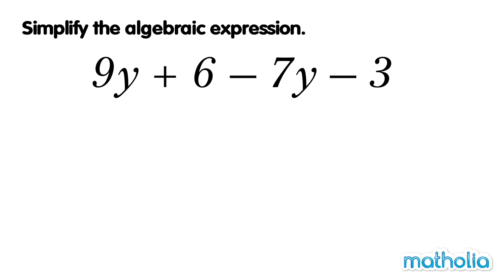Let's simplify 9y plus 6 minus 7y minus 3. There are four terms in this expression. Two terms have y, and two terms are numbers. Let's rewrite the expression so that the terms with y are together, and the terms that are numbers are together.